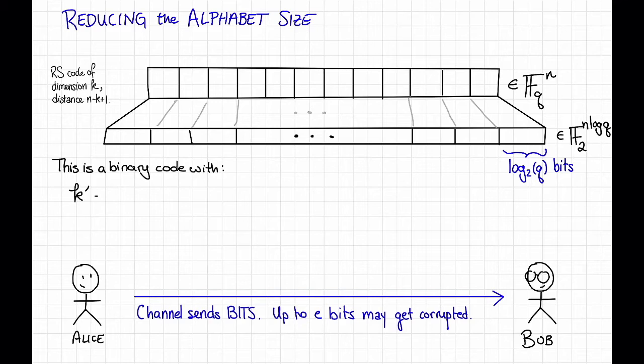Okay, so the message length k prime, well by definition, this is the log base alphabet size. The alphabet size of the new code is 2. The size of the new code is the same as the size of the old code, and the size of the old code is q to the k. So this is the log